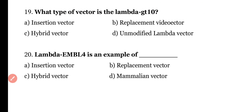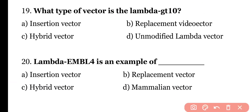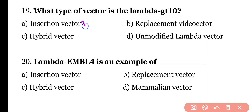Question 19: Which type of vector is lambda GT10? Insertion vector, replacement vector, hybrid vector, or unmodified lambda vector. The correct answer is option A. Lambda GT10 is a type of insertion vector.